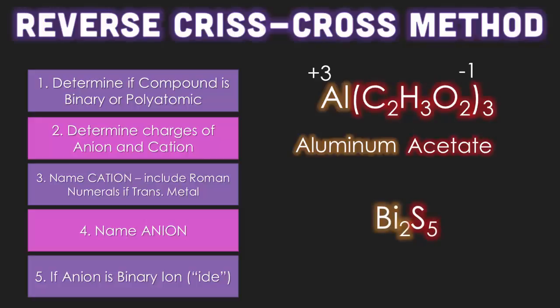Let's try another example. Now you have Bi2S5. So binary or polyatomic? I'm going to say it's binary. Because there's two capital letters. Yeah, only two capital letters.